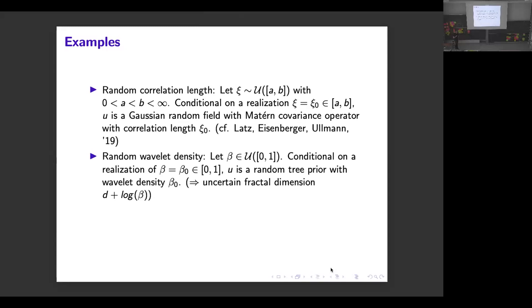For the random fields I consider for the space of random tree prior, I found it interesting to model the wavelet density also as a random variable because this wavelet density basically controls the level or the dimension of your fractals in the domain. This is something you wouldn't know before in the Bayesian setting, so this is something I will definitely look into as another random variable in the inverse setting.